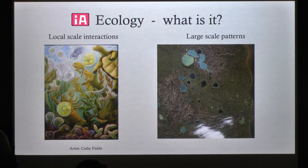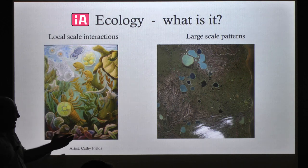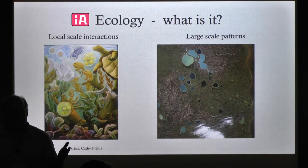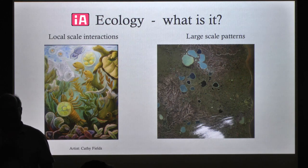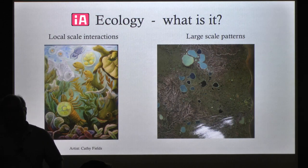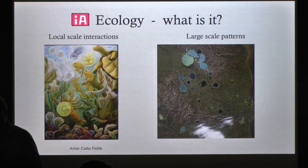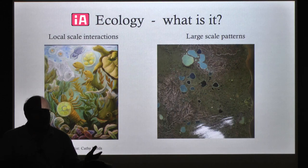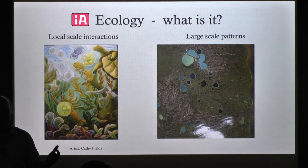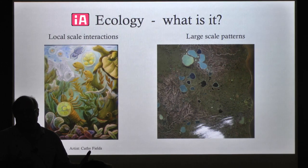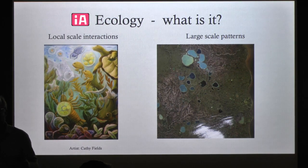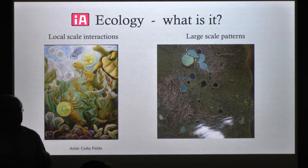Ecology broadly speaking can be divided into two types of approaches. A large-scale pattern approach — I recently read Alexander von Humboldt's biography, which is really inspiring. He was one of the first people to notice that vegetation patterns and plant distributions had a repeated pattern with altitudinal gradients, and that these patterns associated with altitude repeated themselves with latitude, so that tundras were at lower elevation and high latitudes than in the tropics.